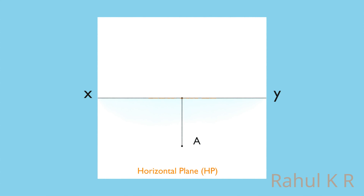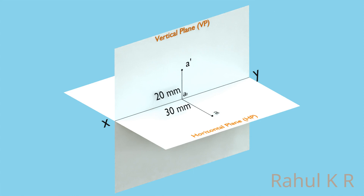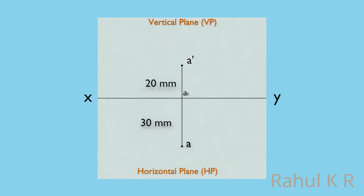The top view is obtained by looking from the top. The top view is a point and it is obtained on the HP, denoted by small letter A. The distance between the actual point A and VP is the same as the distance between the top view small letter A and the XY line. We can also obtain the top view by extending a visual ray from the point A perpendicular to the horizontal plane. Now we have to rotate the HP clockwise 90 degrees, and if we view from the front, this is the projection of the given point A.